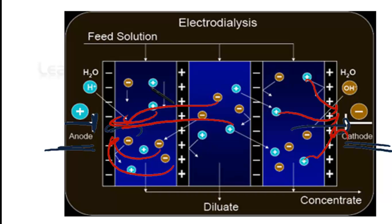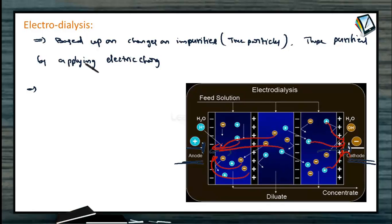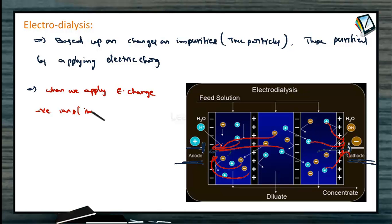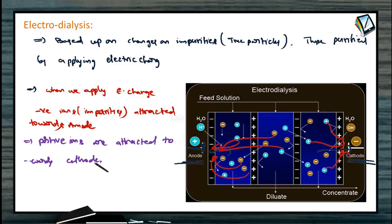By this process, you can get a more purified colloidal solution. Because of the attracting nature of opposite charges, when you apply the electric charge, the corresponding electrolytes acting as impurities are attracted by the electrodes and are purified easily. This is the most efficient process compared to dialysis. In this process, negative ions (impurities) are attracted towards the anode, and positive ions are attracted towards the cathode.